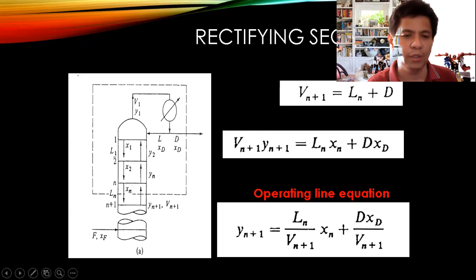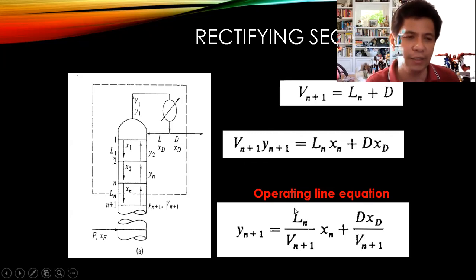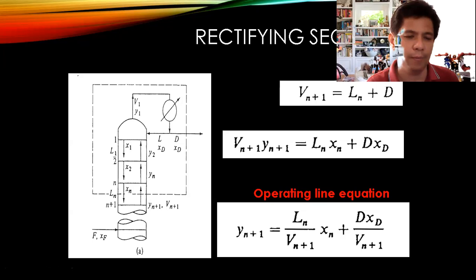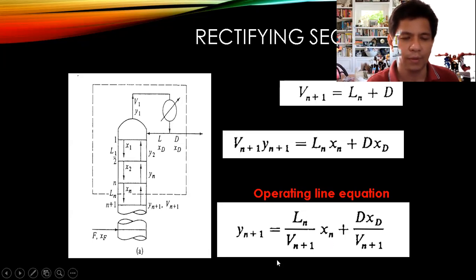To derive the operating line equation, we transpose V_{n+1} to the other side of the component balance equation. The operating line describes the actual concentration at each tray in the distillation column. For example, the pair of points in a given tray is x_1 and y_2 — that's why in the operating line equation you have x_n and y_{n+1}.